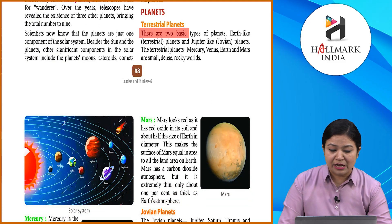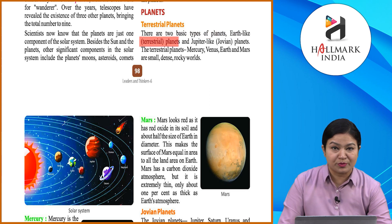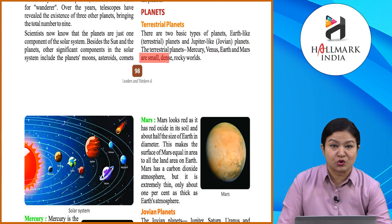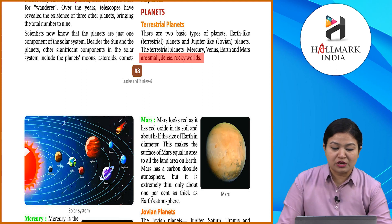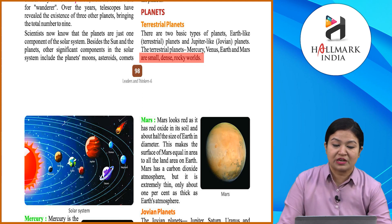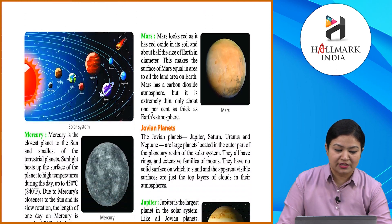There are two basic types of planets: Earth-like terrestrial planets and Jupiter-like Jovian planets. The terrestrial planets — Mercury, Venus, Earth, and Mars — are small, dense, rocky worlds. There are also Jovian planets similar to Jupiter.